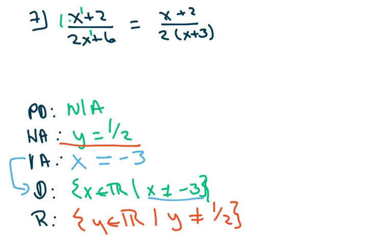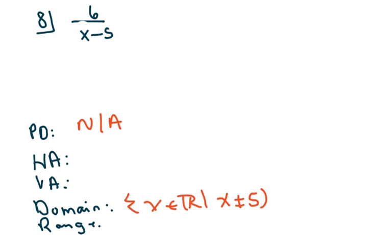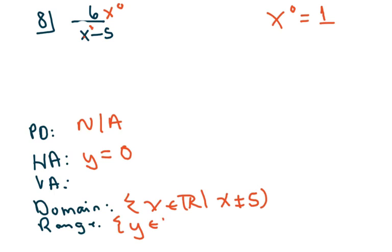The last one is actually the easiest. The domain is all real numbers, but x cannot be five. There are no factors to cancel. The degree in the numerator — I could write the constant as x to the zero, and x to the zero equals one, so the numerator degree is smaller than the denominator degree. Any time it's smaller, the horizontal asymptote is y equals zero. Therefore the range is all real numbers but y cannot be zero. The vertical asymptote is x equals five. And that's all — have a nice day!